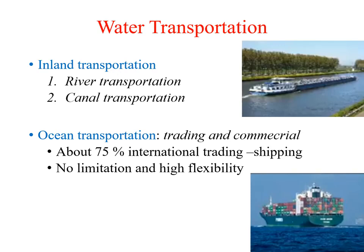The two types are inland transportation and ocean transportation. Inland transportation involves river transportation and canal transportation, whereas ocean transportation is the wider one. Most trading is based on ocean transportation — about 75 percent of international trading is done with shipping. A second characteristic of ocean transportation is there is no limitation for load carrying capacity, and it is highly flexible as far as time is concerned.